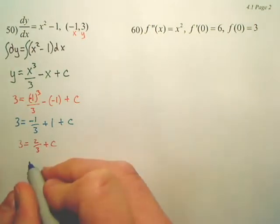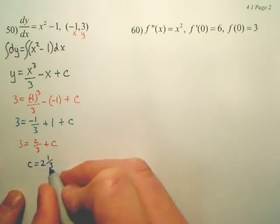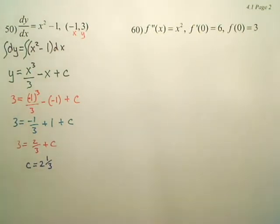So if I minus that over, it looks like we get that c equals 2 and 1 third, or 7 thirds.